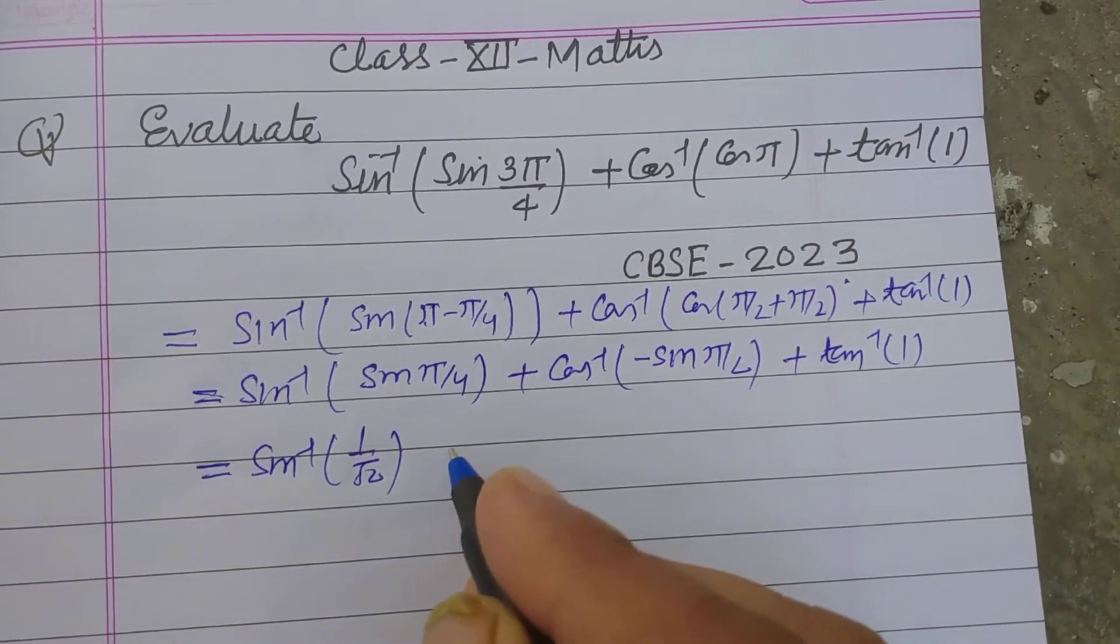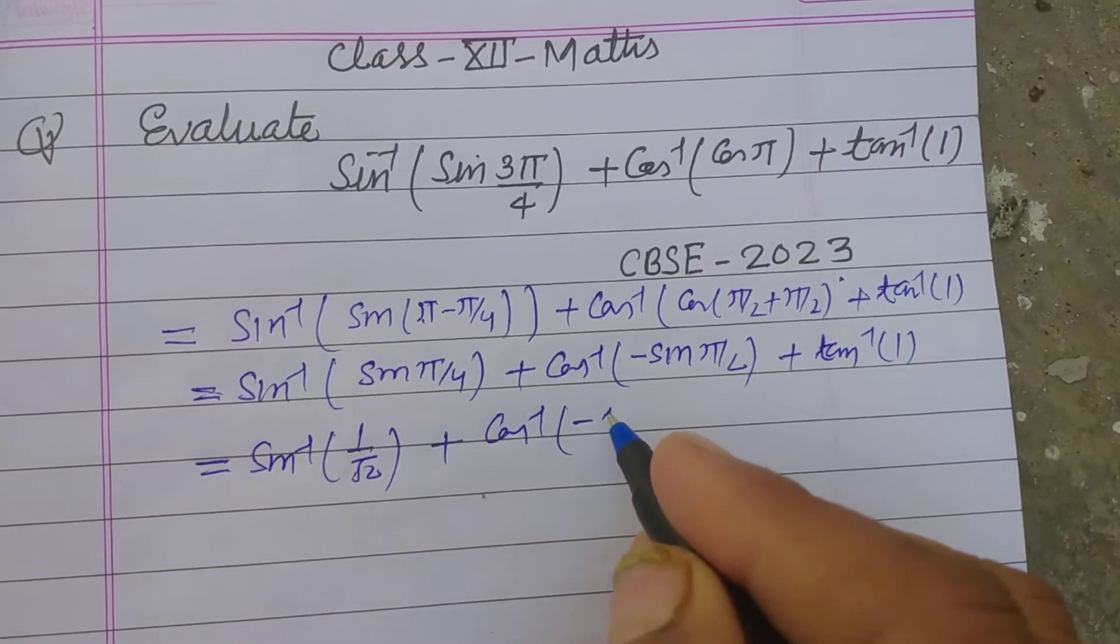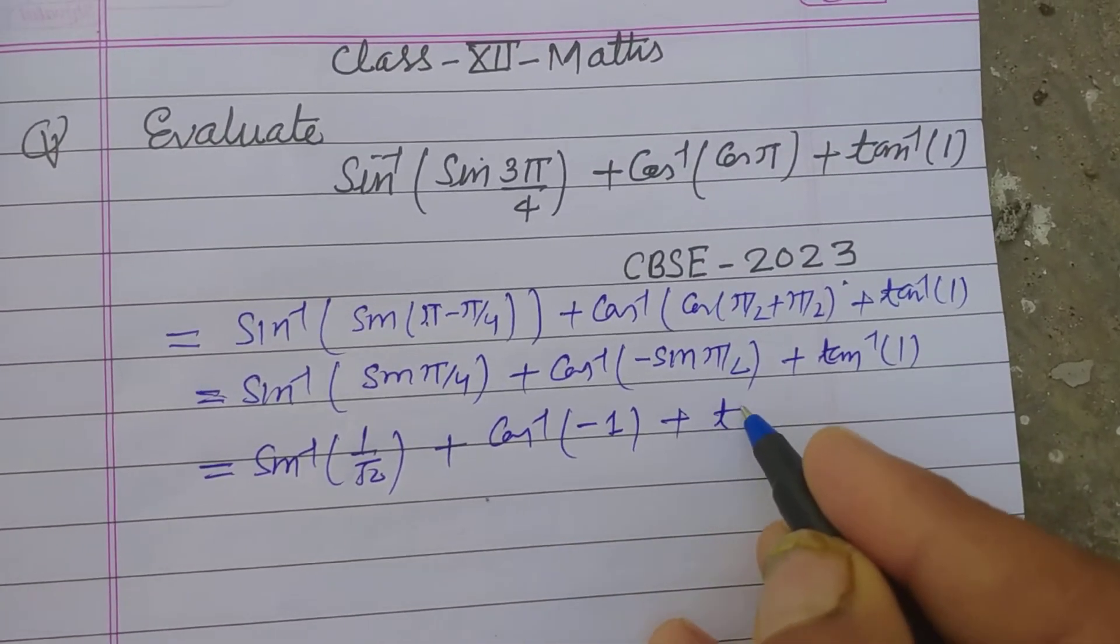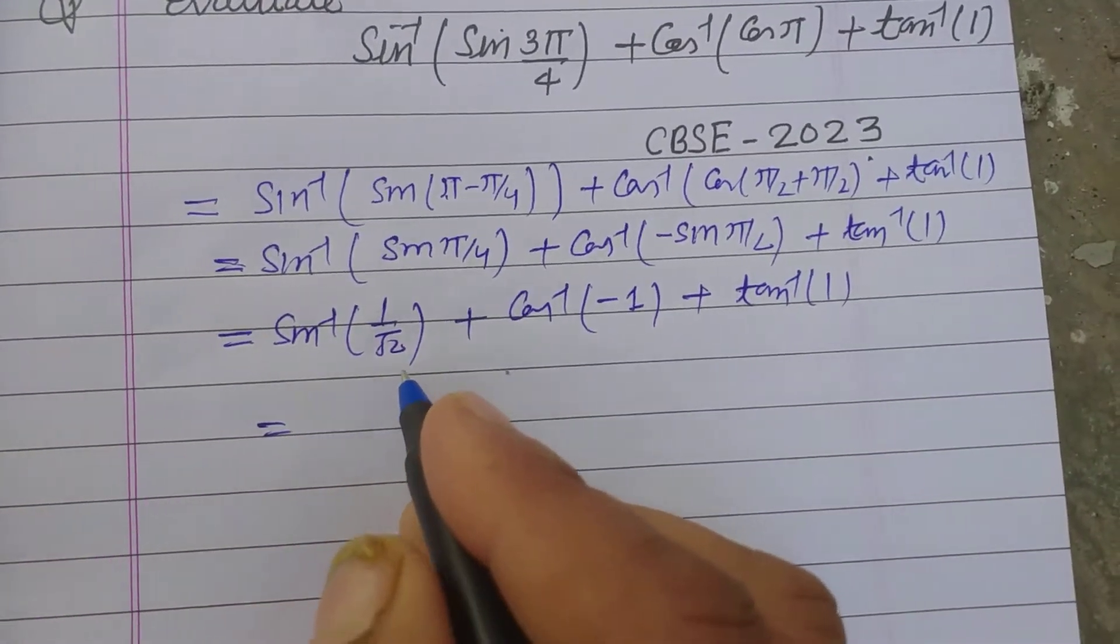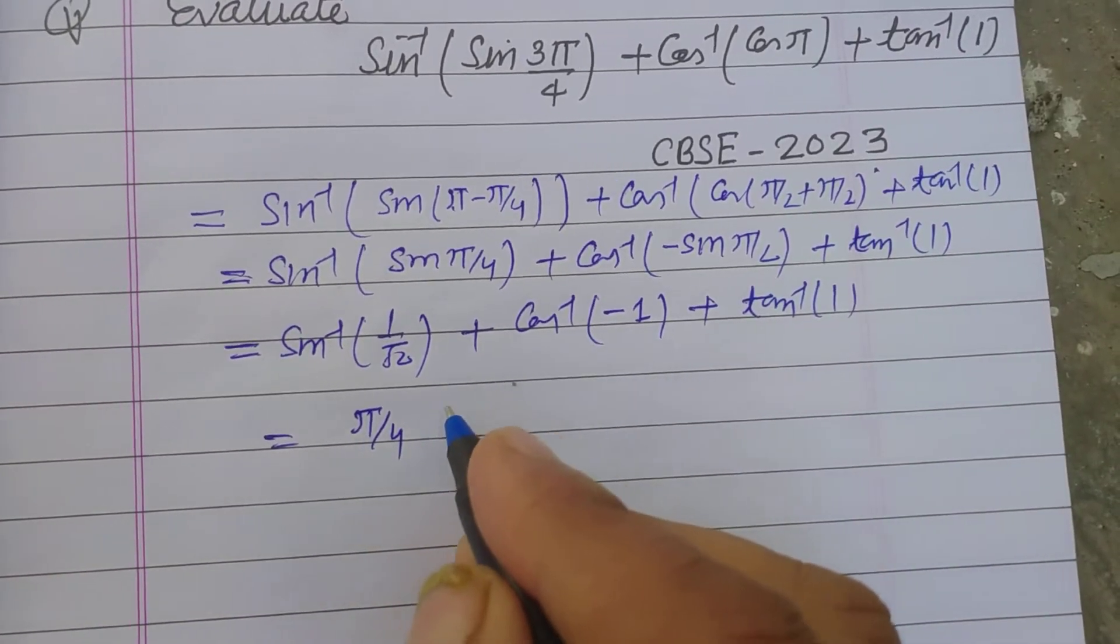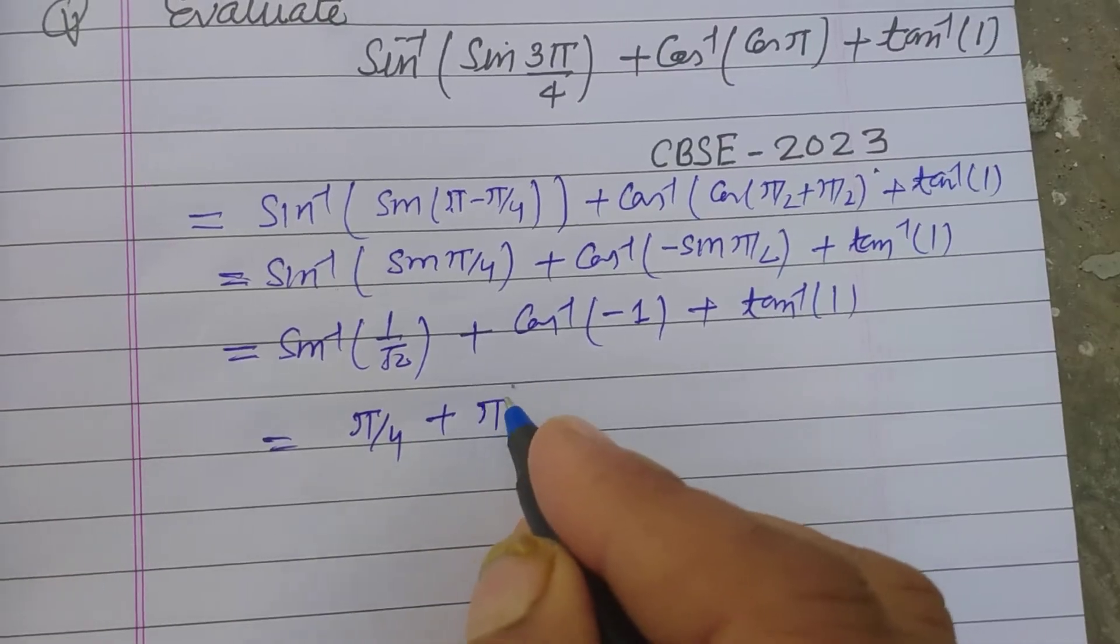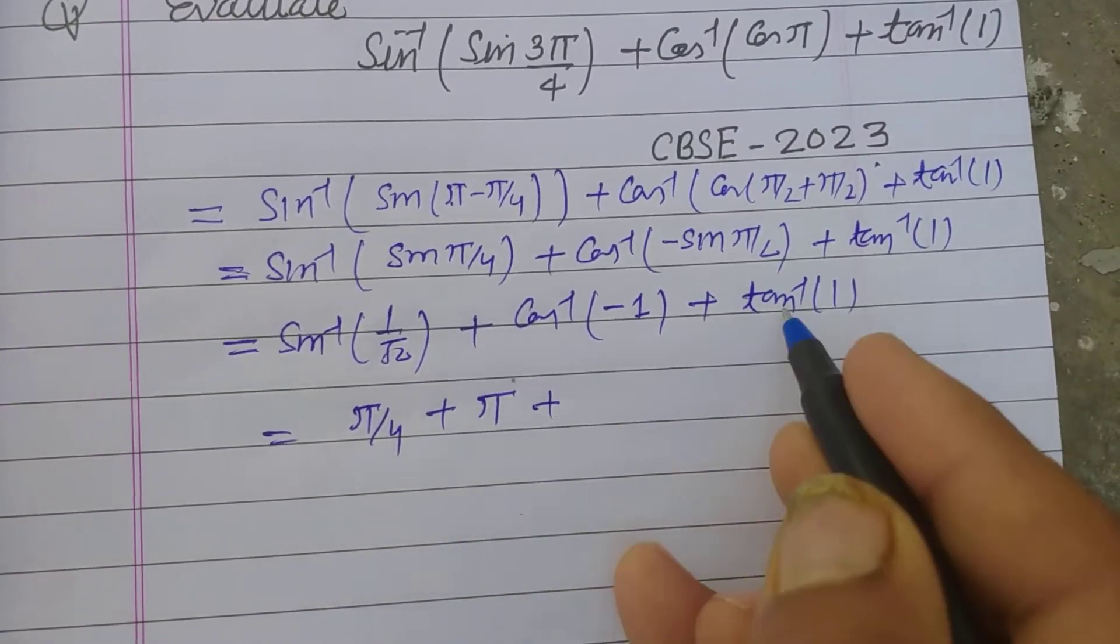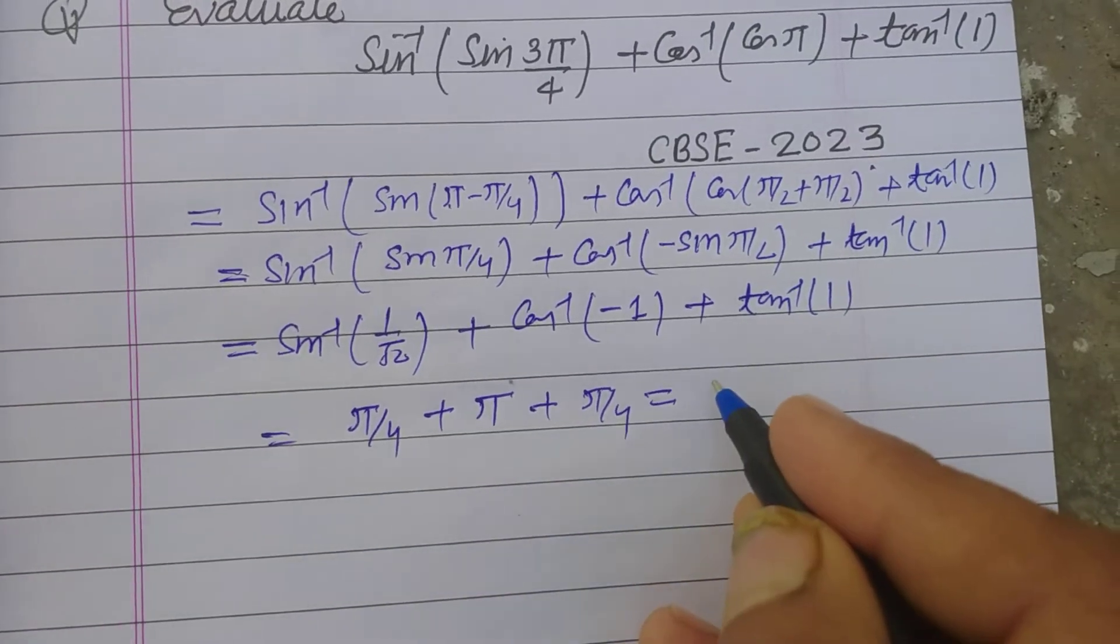Plus cos inverse minus 1, plus tan inverse 1. So sine inverse 1 upon root 2 is π/4. Cos inverse minus 1 is π, and tan inverse 1 is π/4.